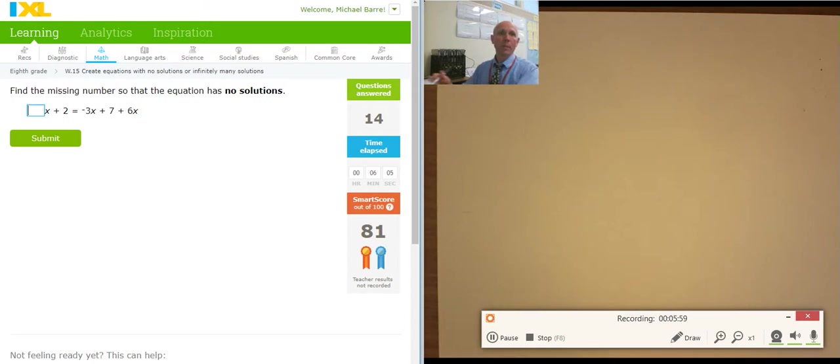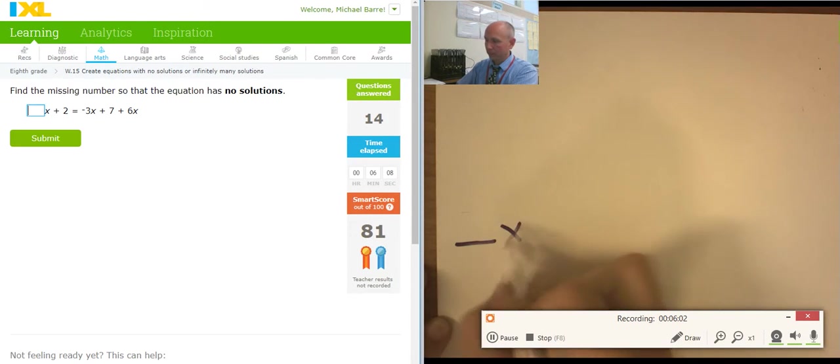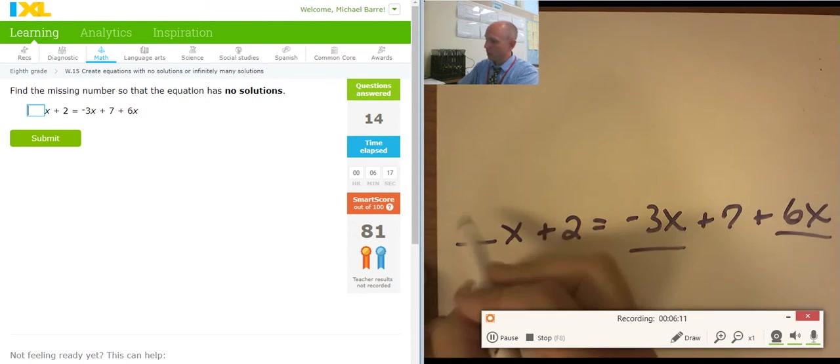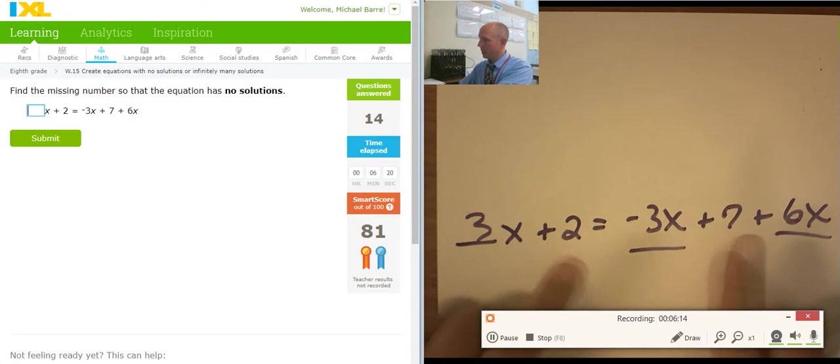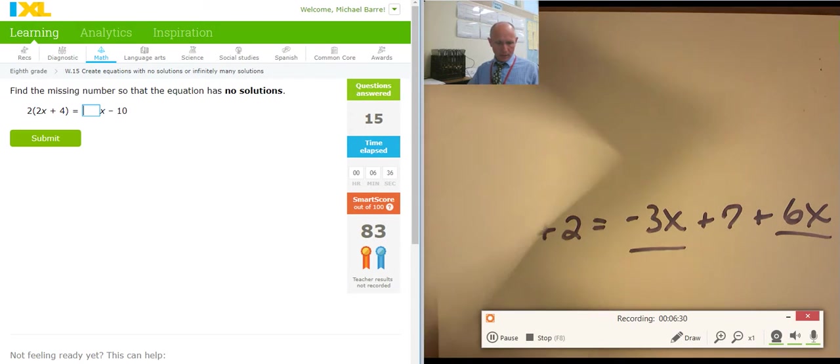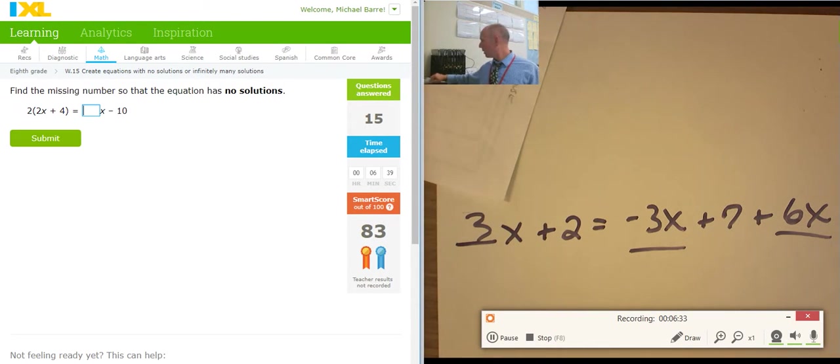So blank x plus 2 equals negative 3x plus 7 plus 6x. So negative 3x and 6x. That's 3x. So I need a 3x over here to cancel with it. And that's going to give me no solution. So 3x. Okay. Maybe they'll get more difficult in the challenge zone. I don't know. But that's my last video for today. How many did I just make? I made those two over here.